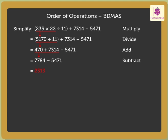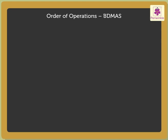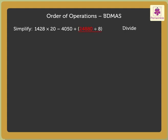Now, let us solve one more example. Step 1: Solve the brackets — divide 24880 by 8 to get 3110.